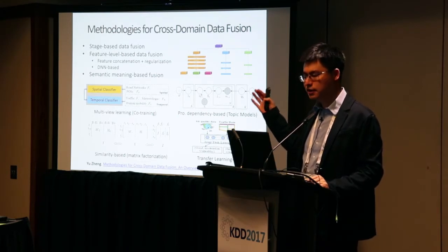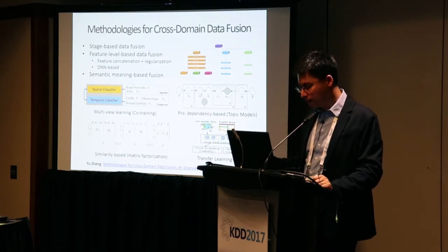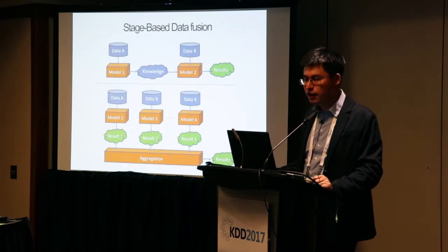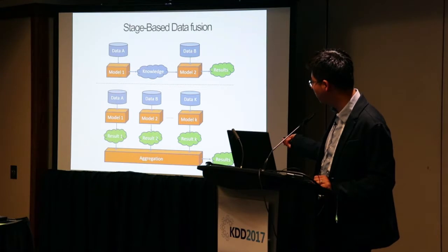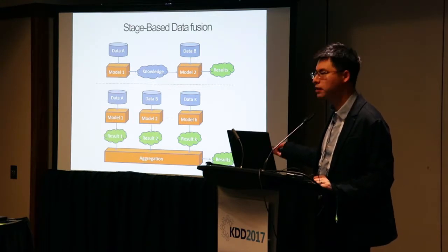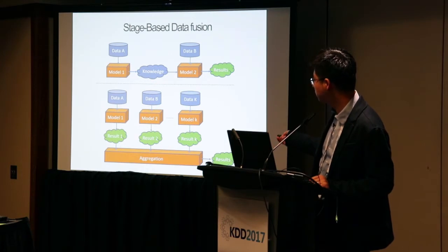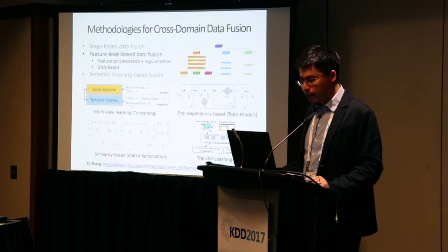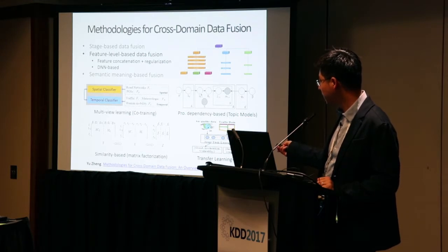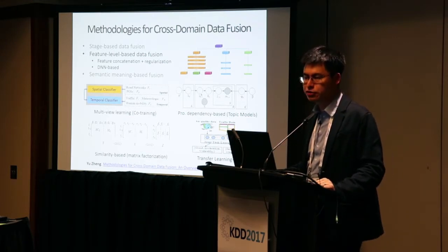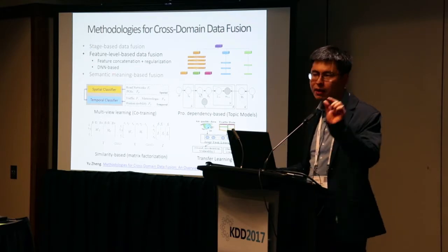I summarize the methodology for fusing knowledge from different domains into three categories. The first is stage-based data fusion: we use one type of data first, then the second type later, step by step. Or we can feed different types of data into different models, aggregate their results, and generate a final result. This is straightforward but has no feedback loop between stages.